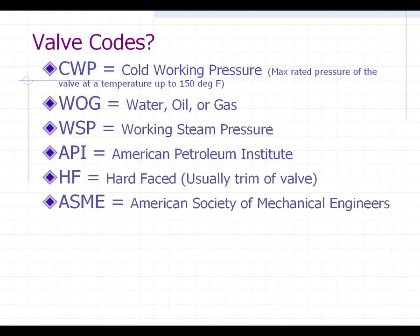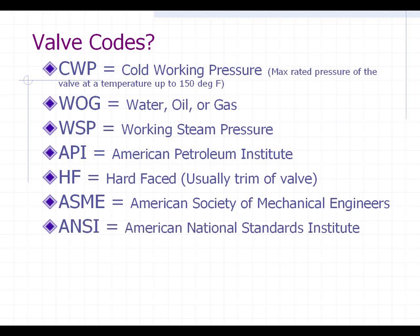ASME is the American Society of Mechanical Engineers, one of the governing bodies that regulates the pressure and temperature ratings in valve codes. If you have a valve that is 1,500 pound rated, they are part of writing that valve code. ANSI — the American National Standard Institute — works together with ASME. You'll hear the terms ANSI 150 and ANSI 1500; these two organizations govern the pressure-temperature ratings that valves are used at in the industry.